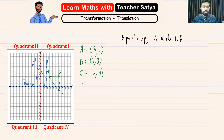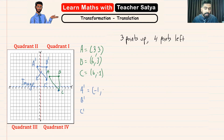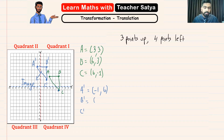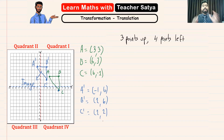Just for fun, let's write the ordered pairs for the new points. A prime is located at (-1, 6). B prime is at (2, 6). And C prime is at (2, 2). And that is how we translate shapes.